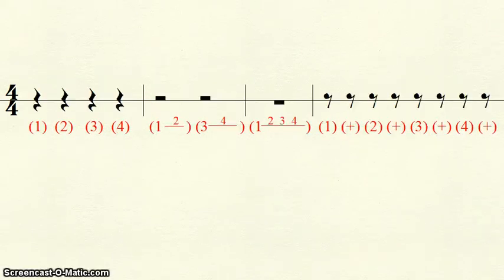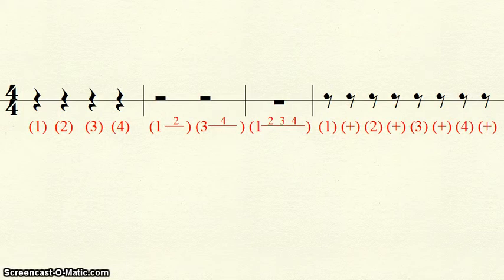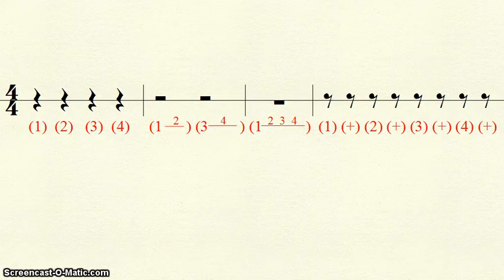To review: quarter rests get 1 beat and are written as individual numbers in parentheses. Half rests get 2 beats and are written with the first beat, a line, and the second beat on the line, all in parentheses. Whole rests get 4 beats and are written as the first beat, a line, and the second, third, and fourth beats on the line, all in parentheses. And eighth rests get half of a beat, with the first eighth rest written on the beat in parentheses, and the second half written as an 'and' in parentheses.